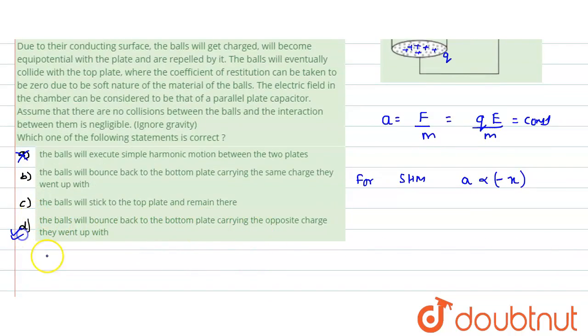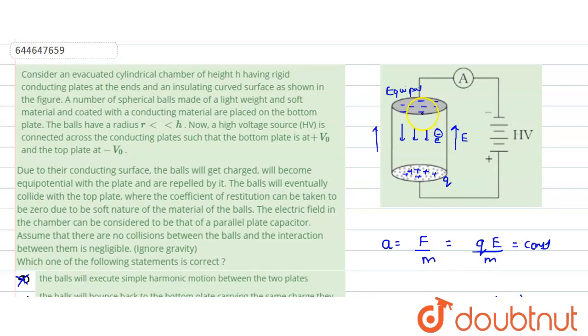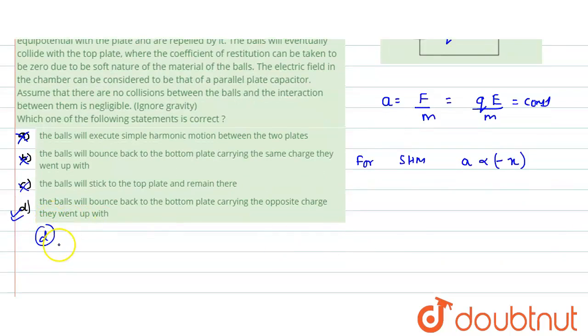So D would be the correct option. In option B, they would be carrying the same charge—no, this is wrong. In option C, they would be sticking to the bottom—no, because by getting the negative charge there would be repulsion, not collision. There would be repulsion due to which they would be coming in the downward direction. So the correct option would be our D option.